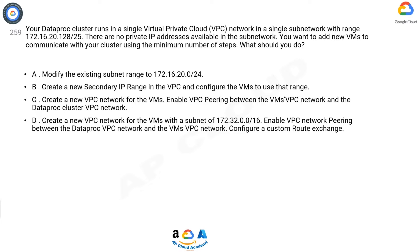Question 259: Your DataProc cluster runs in a single VPC network in a single subnetwork with range 172.16.20.128/25. There are no private IP addresses available in the subnetwork. You want to add new VMs to communicate with your cluster using the minimum number of steps. What should you do? A: Modify the existing subnet range to 172.16.20.0/24. B: Create a new secondary IP range in the VPC and configure the VMs to use that range.